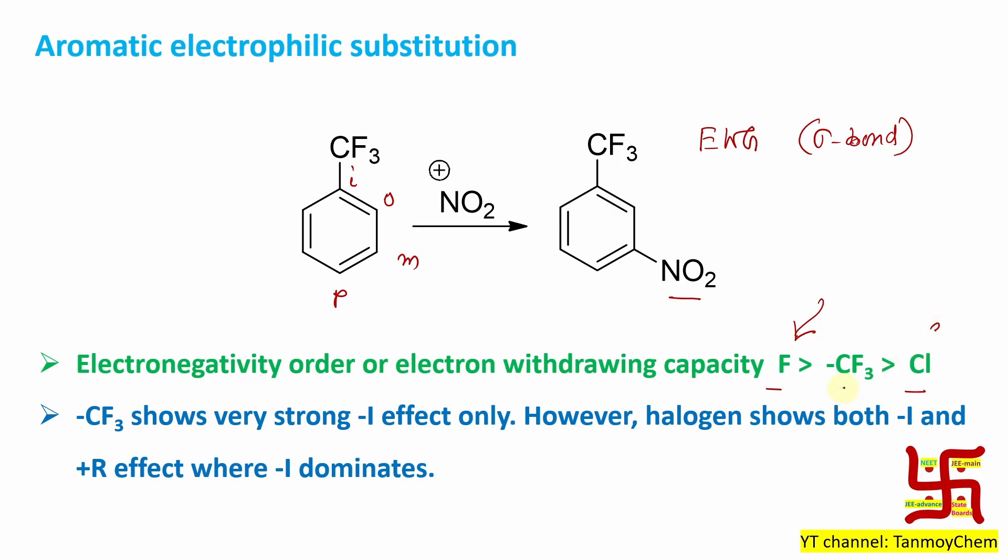The CF3 electronegativity value is in between, so you can understand it's a very strong electron withdrawing group. Not only that, if you look at fluorobenzene or chlorobenzene, this fluorine or chlorine, they are ortho-para orienting but deactivating.